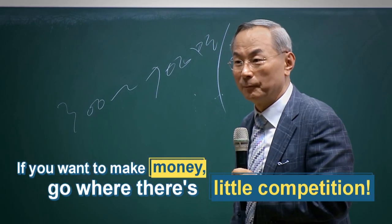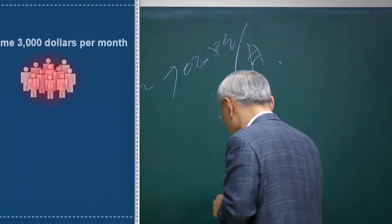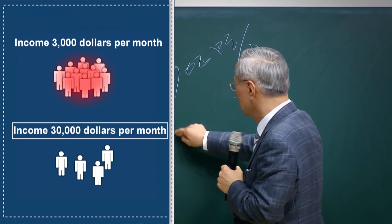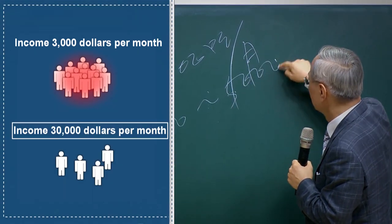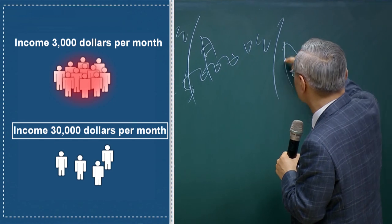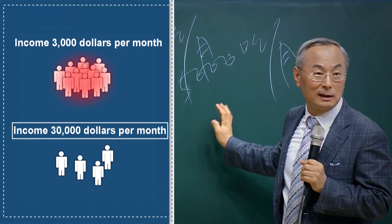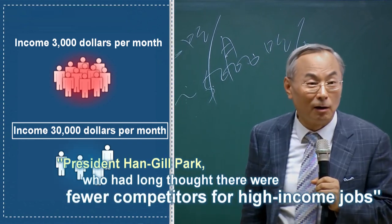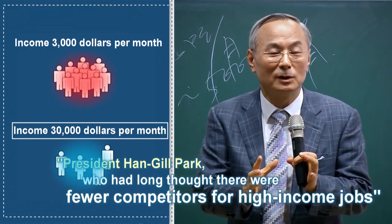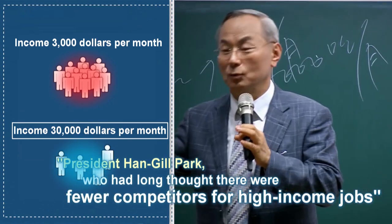Go where there's no competition. That is, people making $30,000 to $50,000 a month. Monthly, not annual. You don't have a lot of rivals in work where you make this kind of money. When you have no rivals, it's a blue ocean.